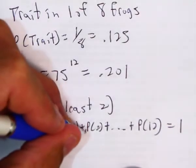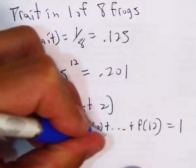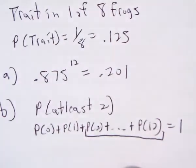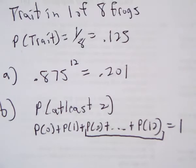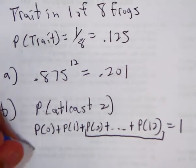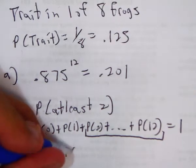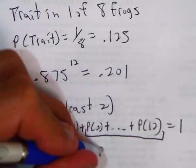So that's at least two is two, three, four, five, six, seven, eight, nine, ten, eleven, twelve add those probabilities together. Well, I don't want to add all ten of those probabilities together. I'm going to take one minus the probability of zero plus the probability of one.